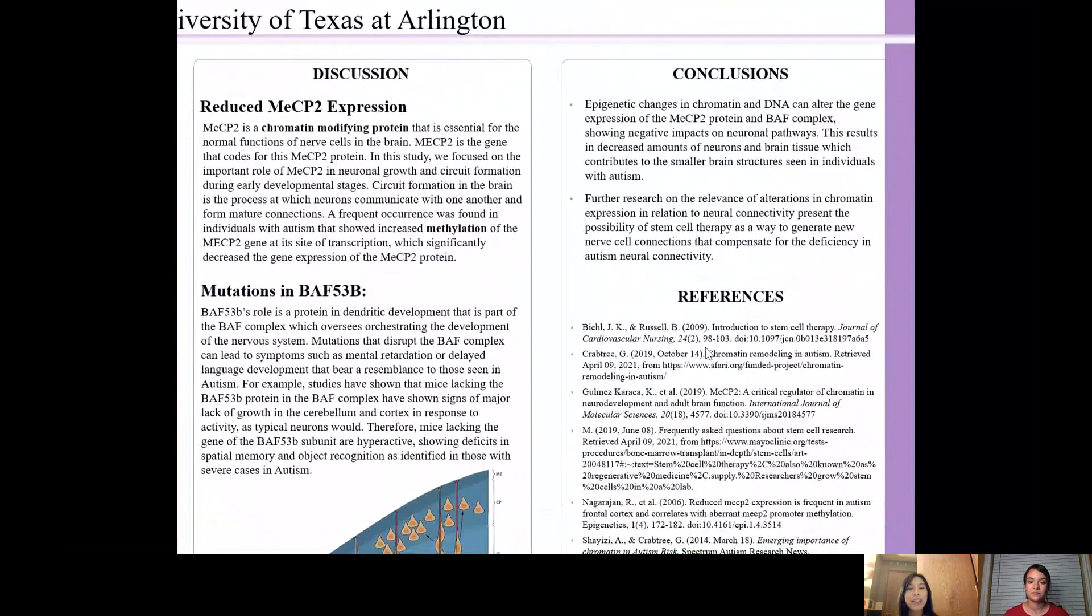And in conclusion, epigenetic changes in chromatin and DNA can alter gene expression of important neural proteins such as MeCP2 or the BAF complex that we mentioned. This results in decreased amounts of neurons and brain tissues, which contribute to the smaller brain structure seen in individuals with autism.